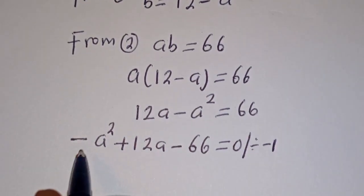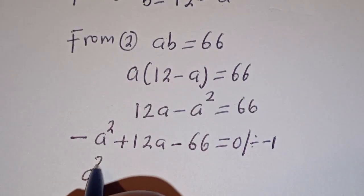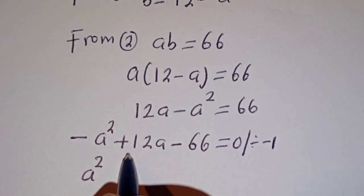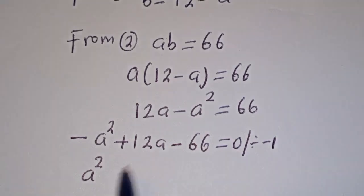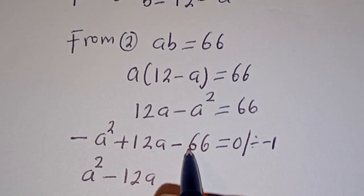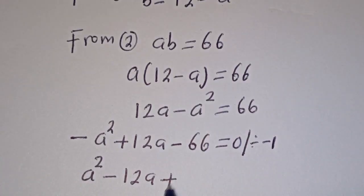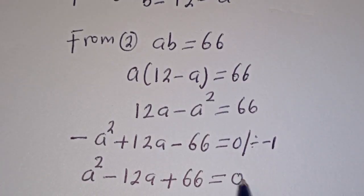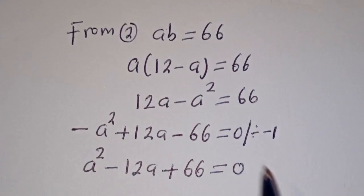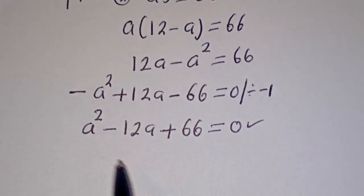If you divide minus A squared by minus 1 we have A squared. If you divide plus 12A by minus 1 we have minus 12A. If you divide minus 66 by minus 1 we have plus 66, equal to 0. So this is a quadratic equation which can be solved using the quadratic general formula.